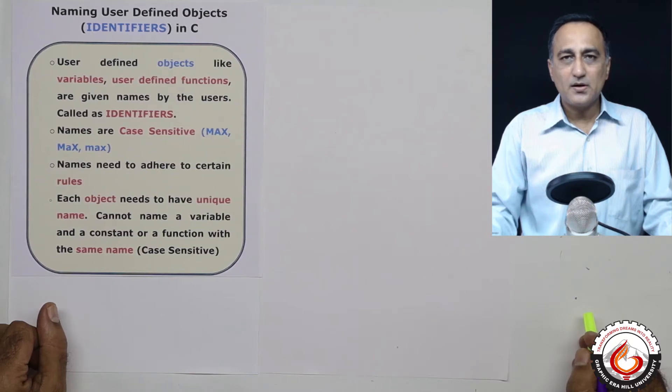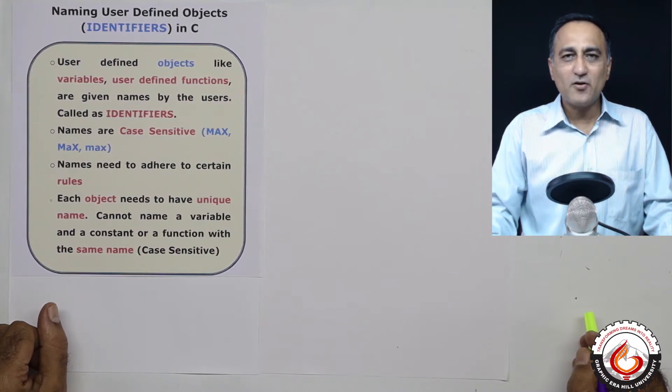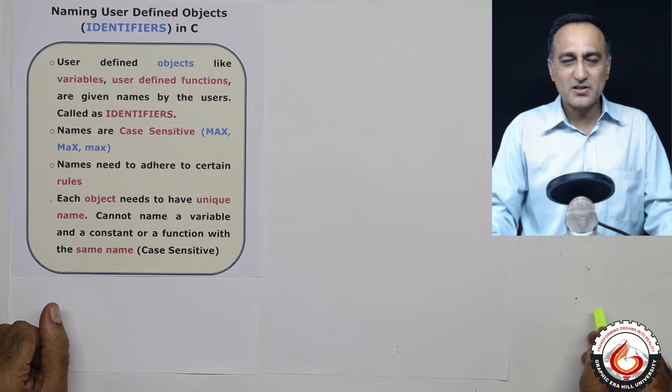In programming, user defined objects are frequently defined or created by a user. For example, a user may create or define variables, may create his own functions, or may name his own constants.